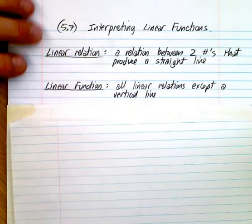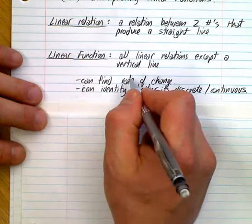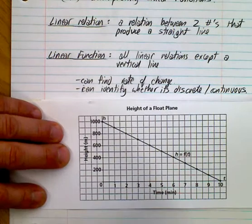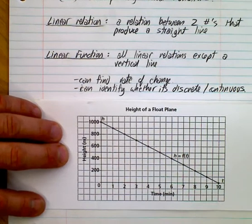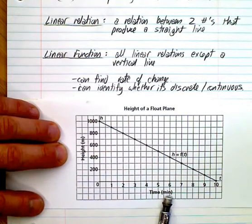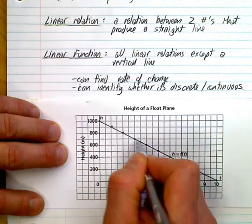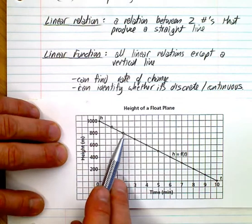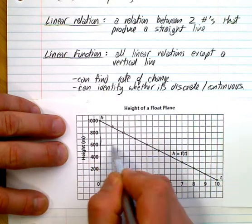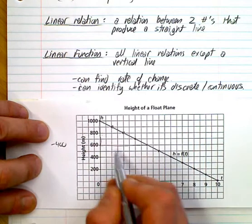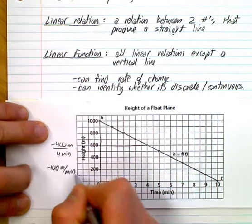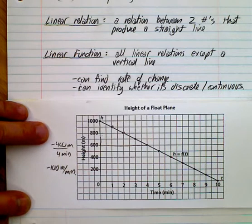So what we're going to look at now are a couple different things. From a linear function, you can find the rate of change, and you can identify whether it's discrete or continuous. Here's an example: the height of a float plane. Can you tell me if this is discrete or continuous? Since the height of the float plane is going steadily down, you reach all heights at all times, so this data would indeed be continuous, even though you've plotted up a bunch of points. You can find your rate of change here by picking any two points — it would be down 400 over four minutes, so minus 100 meters per minute is your rate of change.